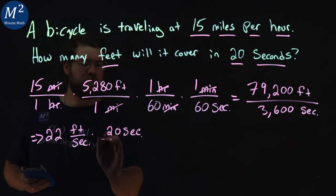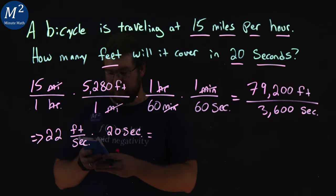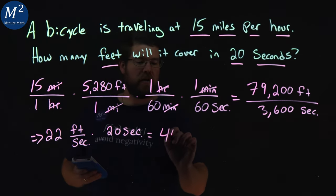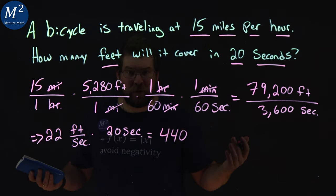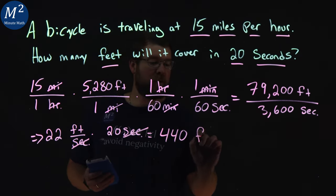I'm going to write it as a fraction here, but 22 times 20 gives me 440. And units always will cancel. Our seconds cancel, leaving the feet is what we're looking for.